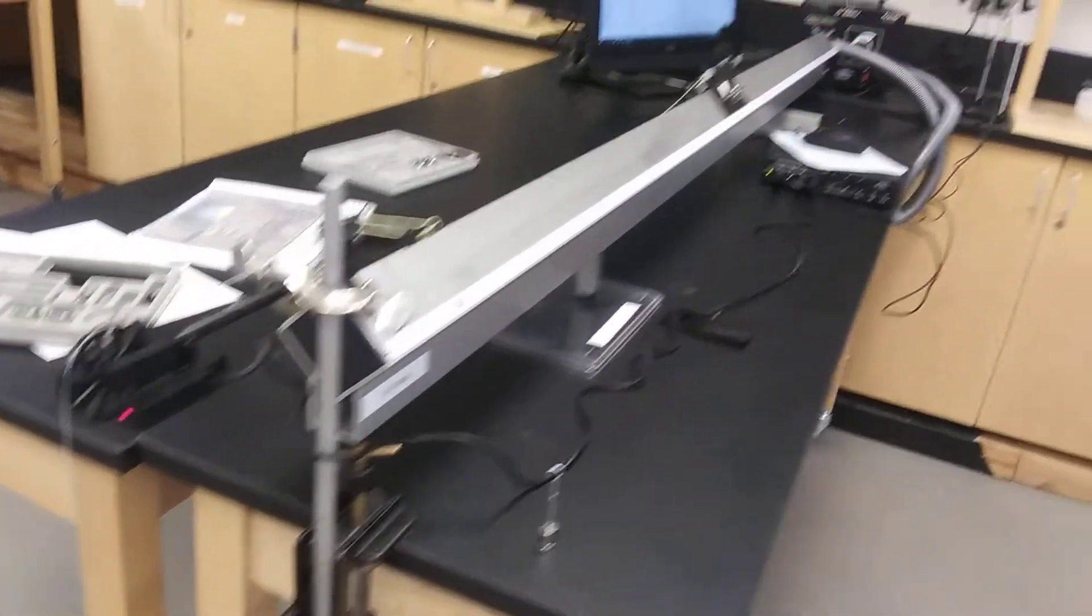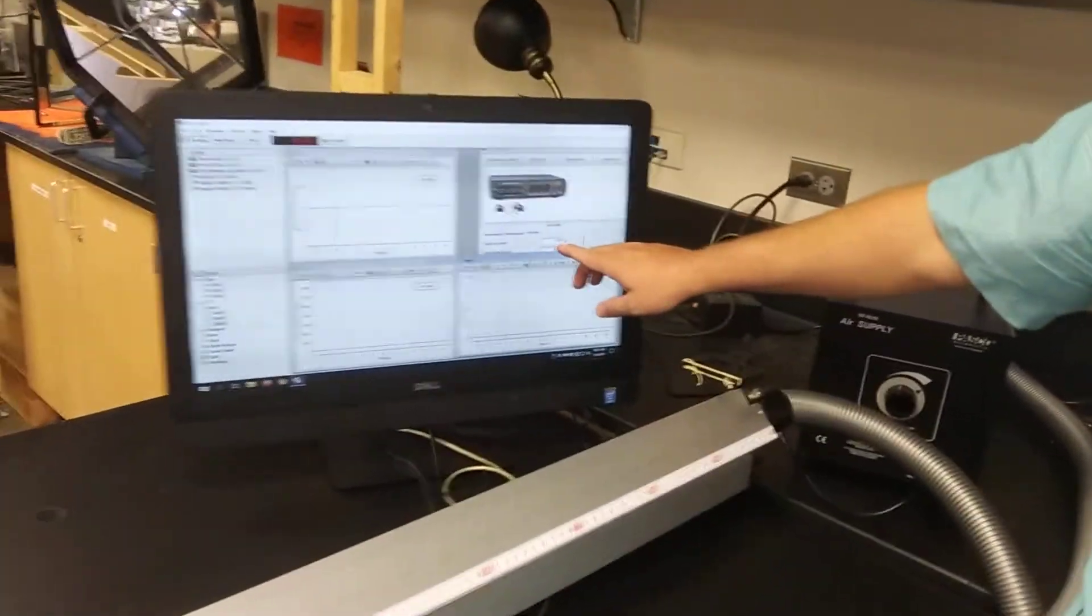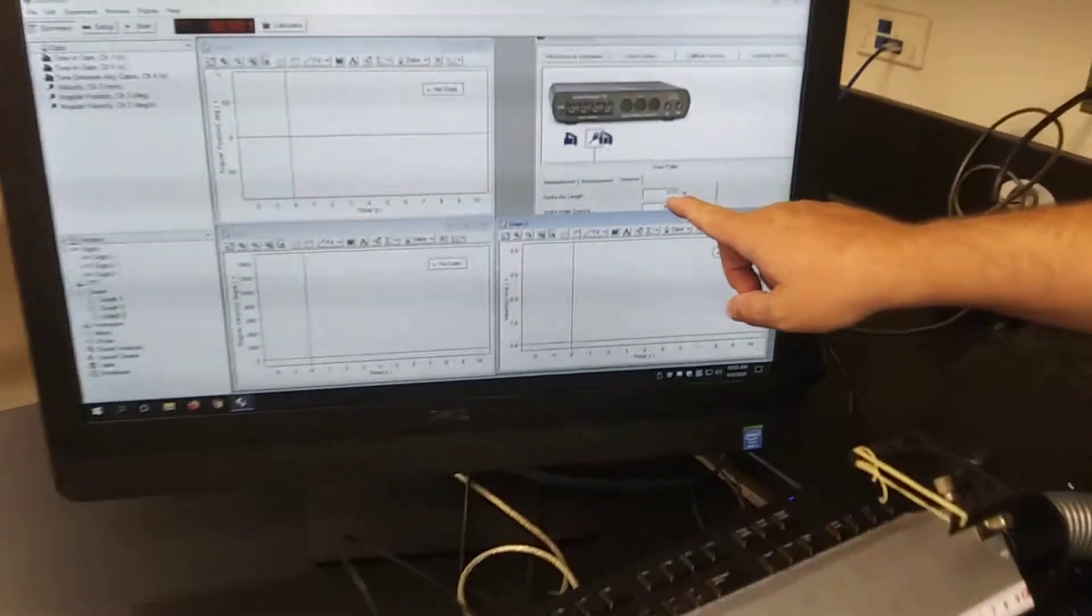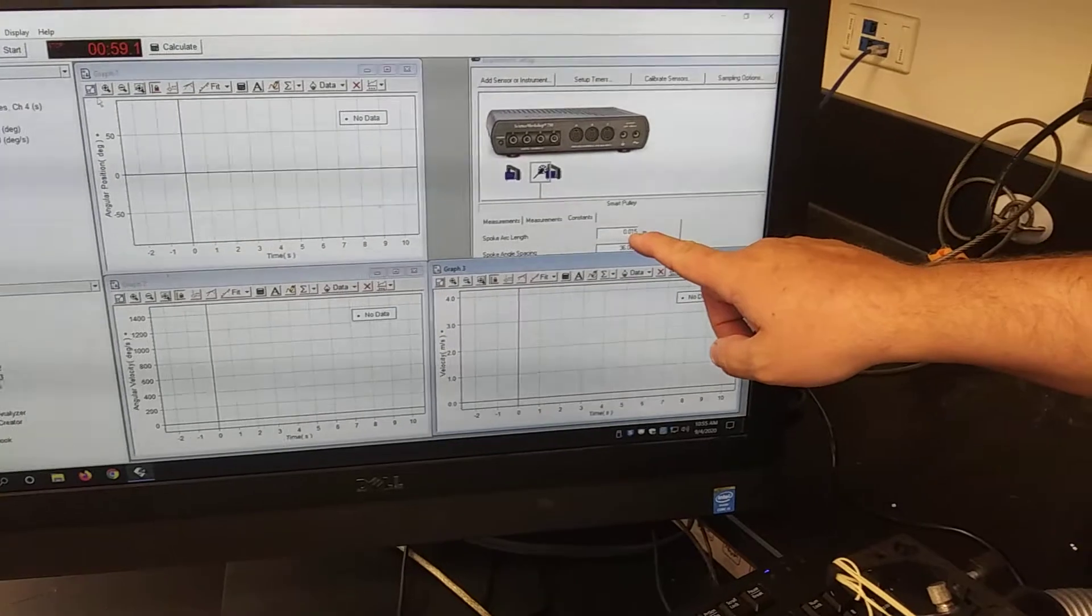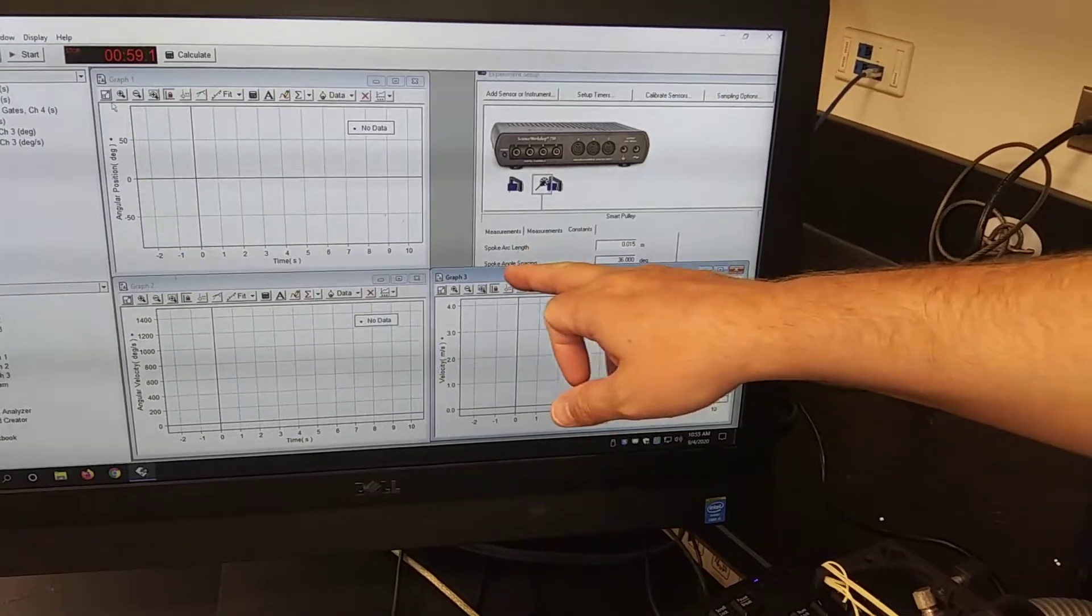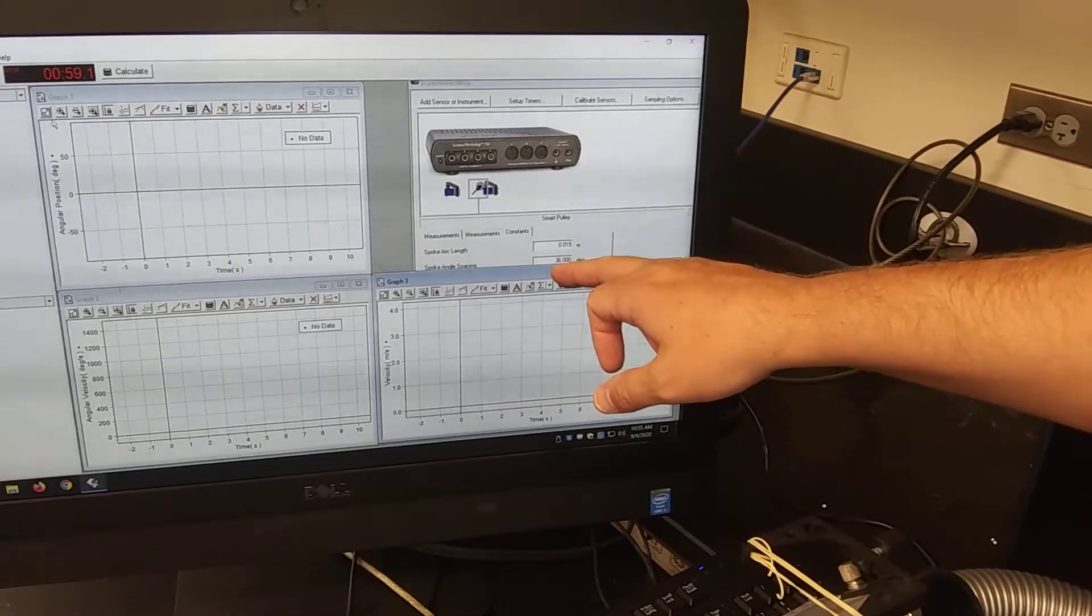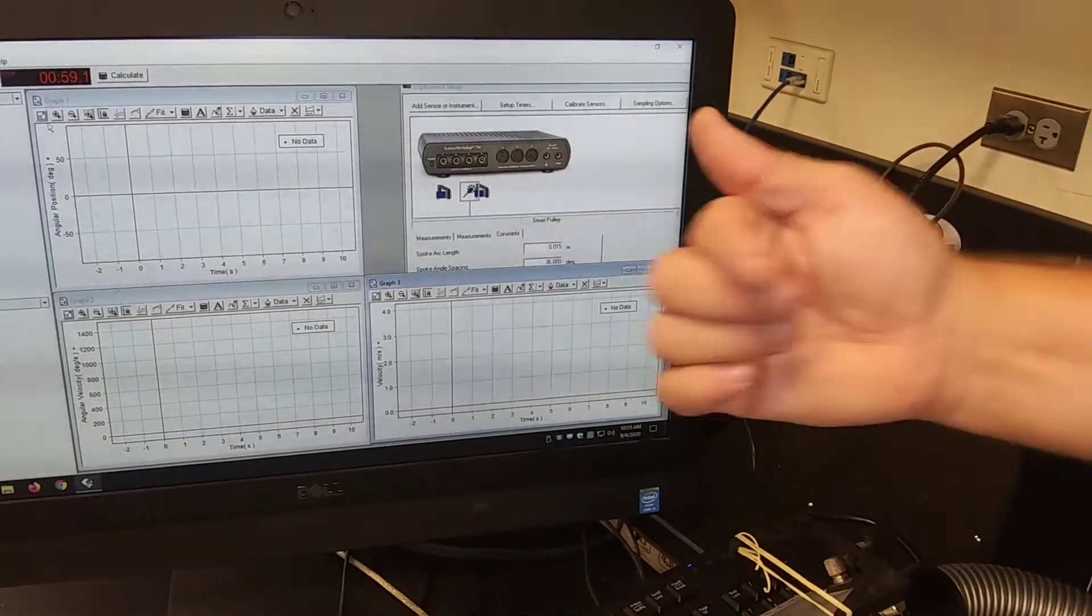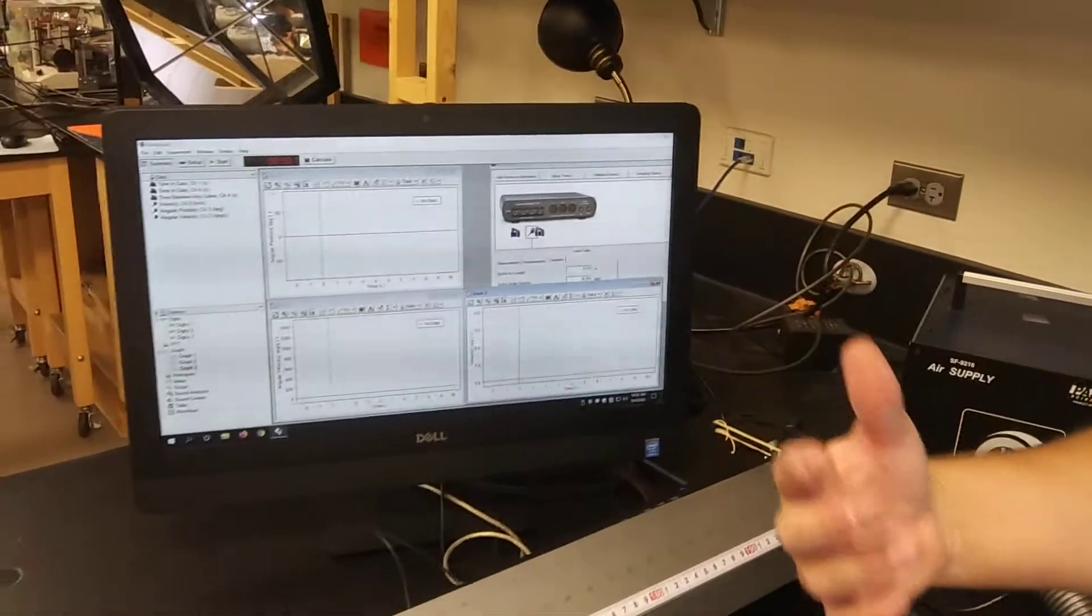Now come over here and I'll show you the specs of this device. The arc length of a spoke at the position of the infrared beam is 0.015 meters. What is that? One and a half centimeters long is the arc length. And then the angle spacing is every 36 degrees. So from that information, you can imagine as this thing is spinning, hopefully you can figure out how that can give us this information.